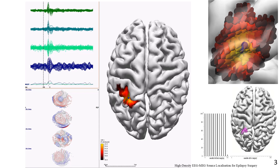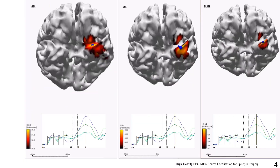Slide 4 demonstrates two key points. The first is that MEG can see mesial temporal sources, and the second is that mixing MEG and EEG signals in the same space as EMSL does not necessarily improve the localization accuracy of these source solutions, due to a lead-lag effect.